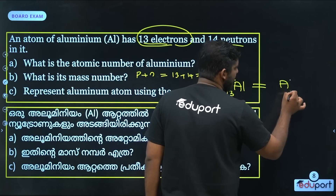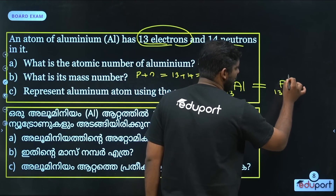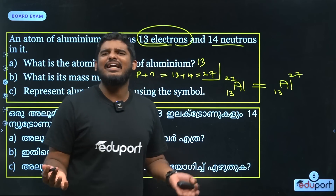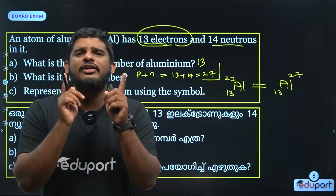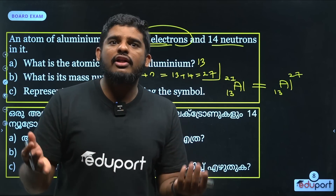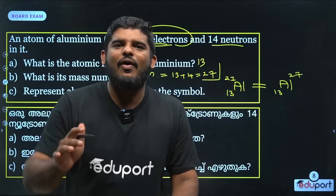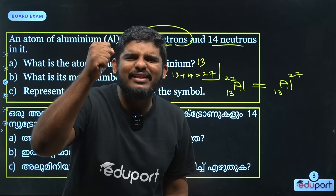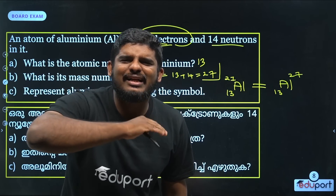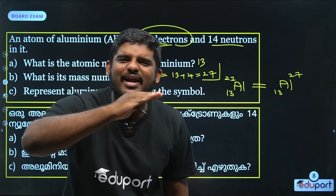Aluminum is represented as Al with atomic number 13 and mass number 27. This is the symbolic representation of aluminum.